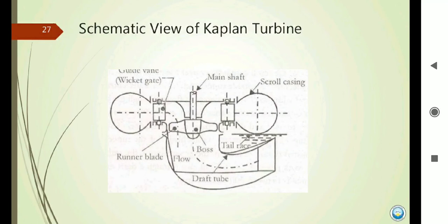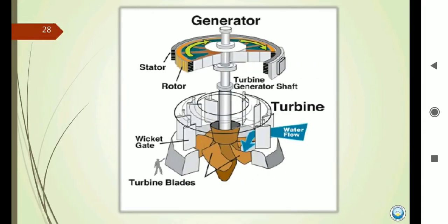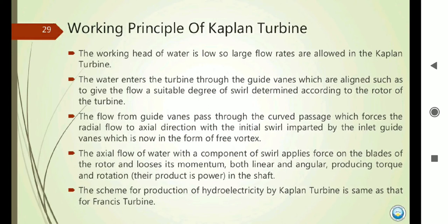In the Kaplan Turbine, the main shaft connects to the runner blades, with draft tubes always used. In the schematic diagram, you can see the axial flow turbine arrangement. Since the head of water is low, a large volume of water flows through the Kaplan Turbine. Water enters through the guide vanes, which give the flow a suitable swirl component determined according to the design of the turbine. The axial flow water with a swirl component applies force on the blades, and the water loses its momentum — both linear and angular — producing torque and rotation. The hydroelectric scheme using a Kaplan Turbine is similar to that of the Francis Turbine.